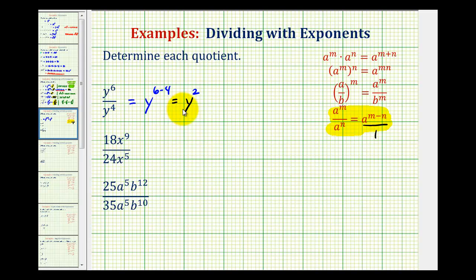Now if we're ever not sure about this rule or want to verify our work, we can expand each expression. Y to the sixth would be six factors of y, and y to the fourth would be four factors of y.